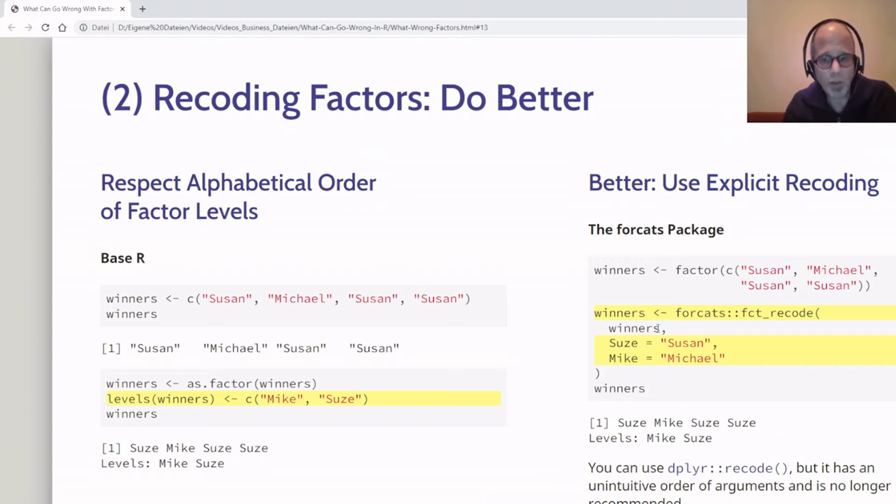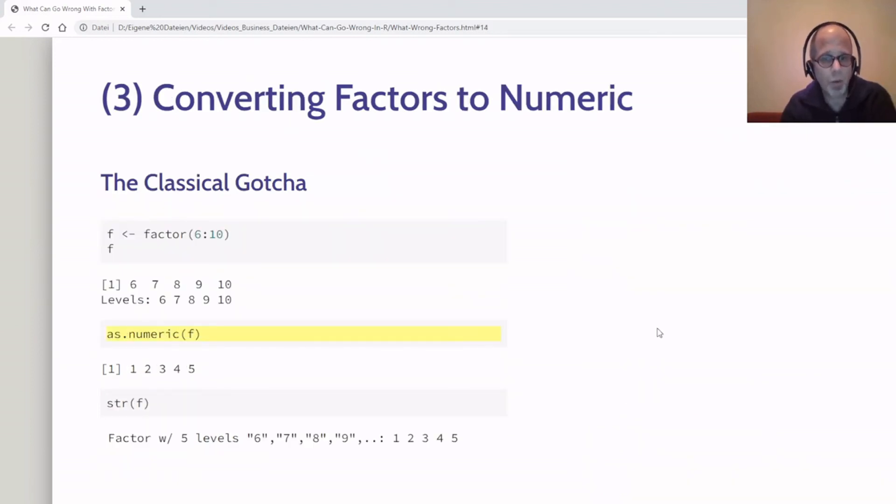That was the second challenge. Now on to the third challenge: converting factors to numeric. This is a classic, really—the classical gotcha is here on the left hand side. We have a factor with the numbers 6 to 10, so that factor looks good. The values are 6 to 10 and the levels are 6 to 10. When I want to convert that to a numeric vector I can use the as.numeric function, and it gives me the result I probably didn't want—the numbers from 1 to 5. This is a classical gotcha when dealing with factors that hold numbers.